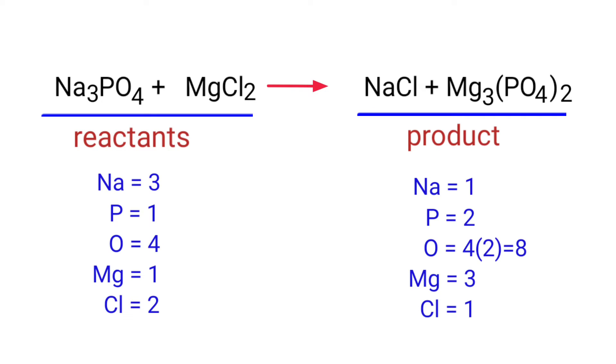On the products side there are 1 sodium atom, 2 phosphorus atoms, 8 oxygen atoms, 3 magnesium atoms, and 1 chlorine atom.